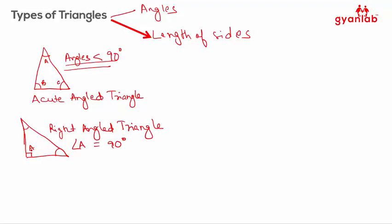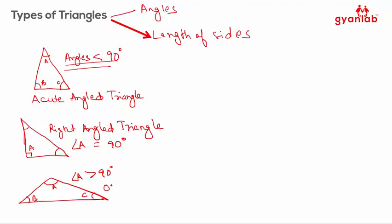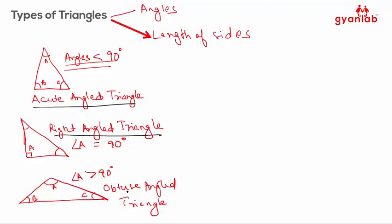For a third type of triangle, while this angle and this angle are acute angles, this angle here — say angle A — is greater than 90 degrees while the other two angles are less. In that case, if one of the angles is greater than 90 degrees, it is called an obtuse angled triangle. So the three classifications based on angles are: acute angle triangle, right angle triangle, and obtuse angle triangle.